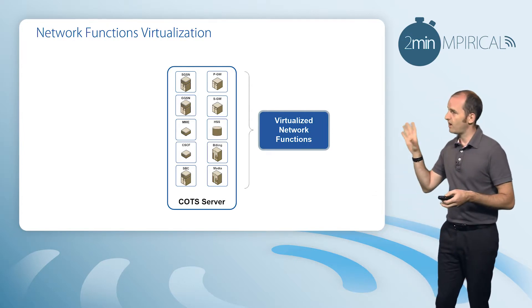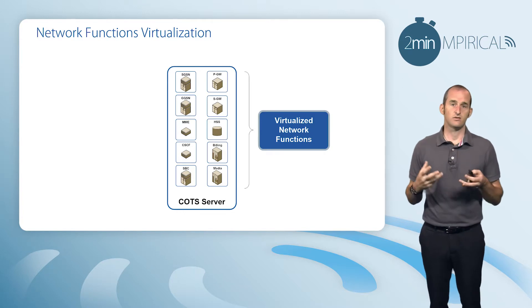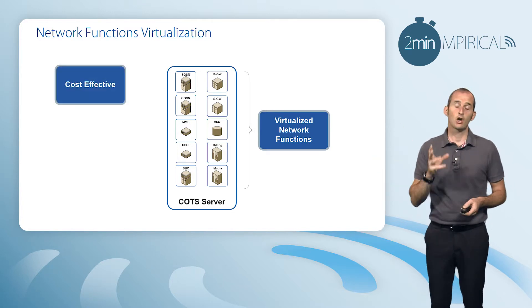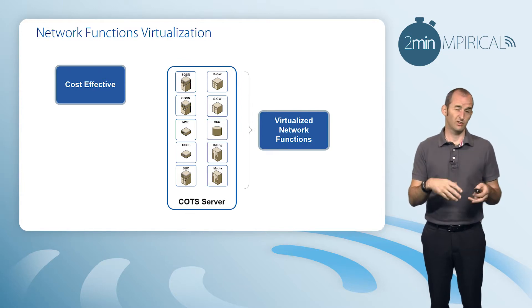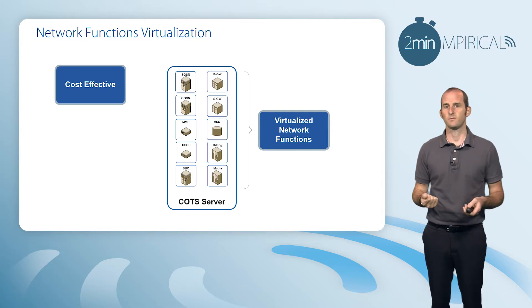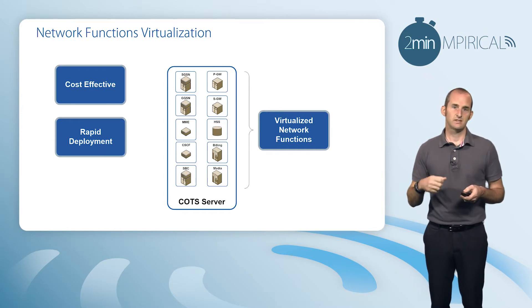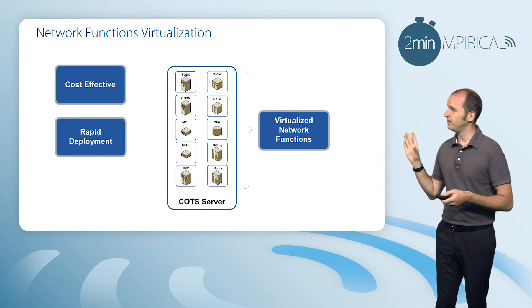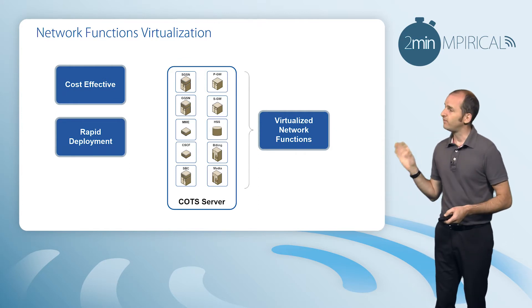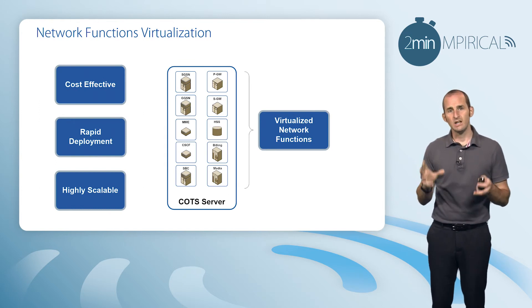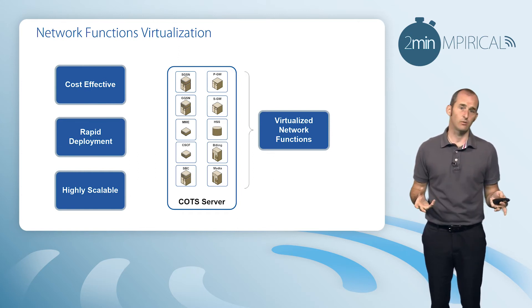By running all of these various network nodes as software functions on a piece of common hardware, it has various implications for the service provider, including cost effectiveness. It's much cheaper to run the network in this manner than to run lots of individual nodes and also buy each one in the first instance. It also means we can deploy extra capacity much more rapidly — instead of lead times in the region of months, we're talking days or even hours. Finally, it's a highly scalable architecture, so the management system that comes with NFV can monitor the network and scale capacity up or down as and when required.